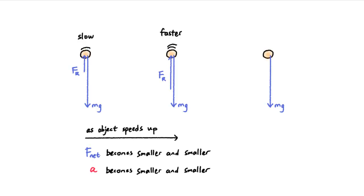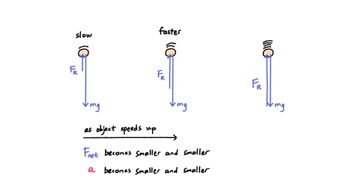Terminal velocity is attained when the object reaches a speed at which air resistance matches the weight. At this point, the net force acting on the object is zero. The object does not accelerate anymore, but continues falling at constant speed.